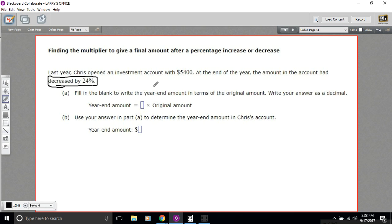If you decrease by 24%, one way to find that is you could multiply 5400 by 24% and then subtract that amount from 5400. Or, 100 minus 24 would be 76, so if something decreases by 24%, that means you have 76% of it left. So if we're going to write the year-end amount in terms of the original amount, we could say 0.76 times the original amount.